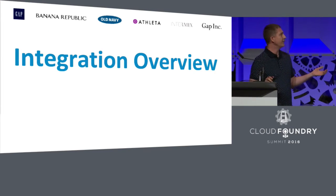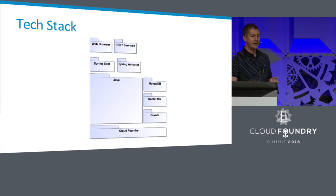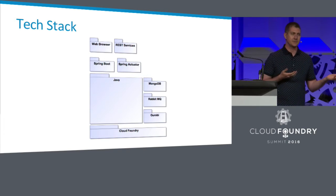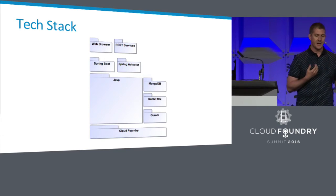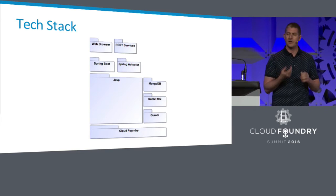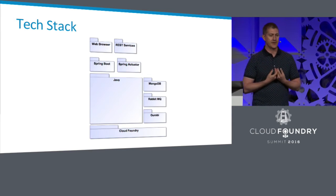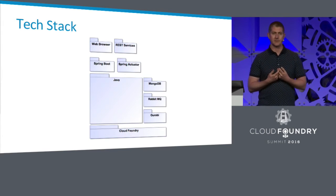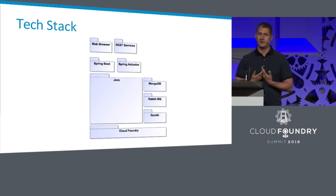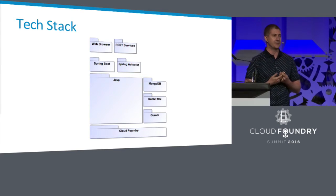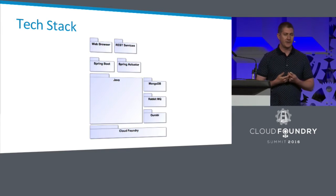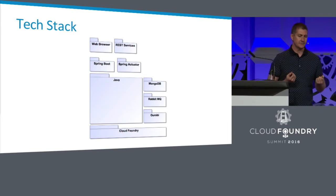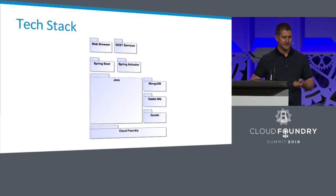Here's a technical overview of how this has been integrated — our tech stack. Sitting on the bottom is Cloud Foundry; we use Pivotal as our vendor. It's a Java-based application that talks to MongoDB, RabbitMQ, and Gurobi, which is that linear solver I mentioned. We're a Spring Boot shop now — we've migrated a lot of our applications to Spring Boot, and that's been really powerful. We also use Spring Actuator for some endpoints, and we allow clients to interface to our system either through a web browser or through a set of REST services.